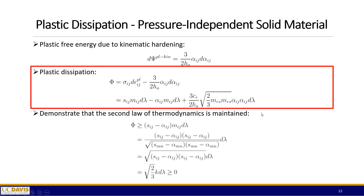Inserting the Armstrong-Frederick hardening rule into the earlier derived expression, we can calculate the plastic free energy due to kinematic hardening — assuming no isotropic hardening, so only kinematic hardening contributes. The actual plastic dissipation is calculated by subtracting the plastic free energy from the plastic work: stress tensor multiplied with the plastic strain tensor, minus the plastic free energy term. This yields the final expression for plastic dissipation for this material model. Mathematically, this expression is always non-negative, demonstrating that the second law of thermodynamics is maintained.